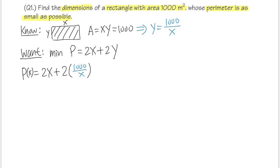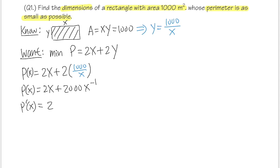Let's simplify: P(x) = 2x plus 2000 times x to the negative one. Now take the derivative: P'(x) = 2 minus 2000x to the negative two. To find critical numbers, set this equal to zero. Moving the second term to the other side: 2 = 2000 over x squared.